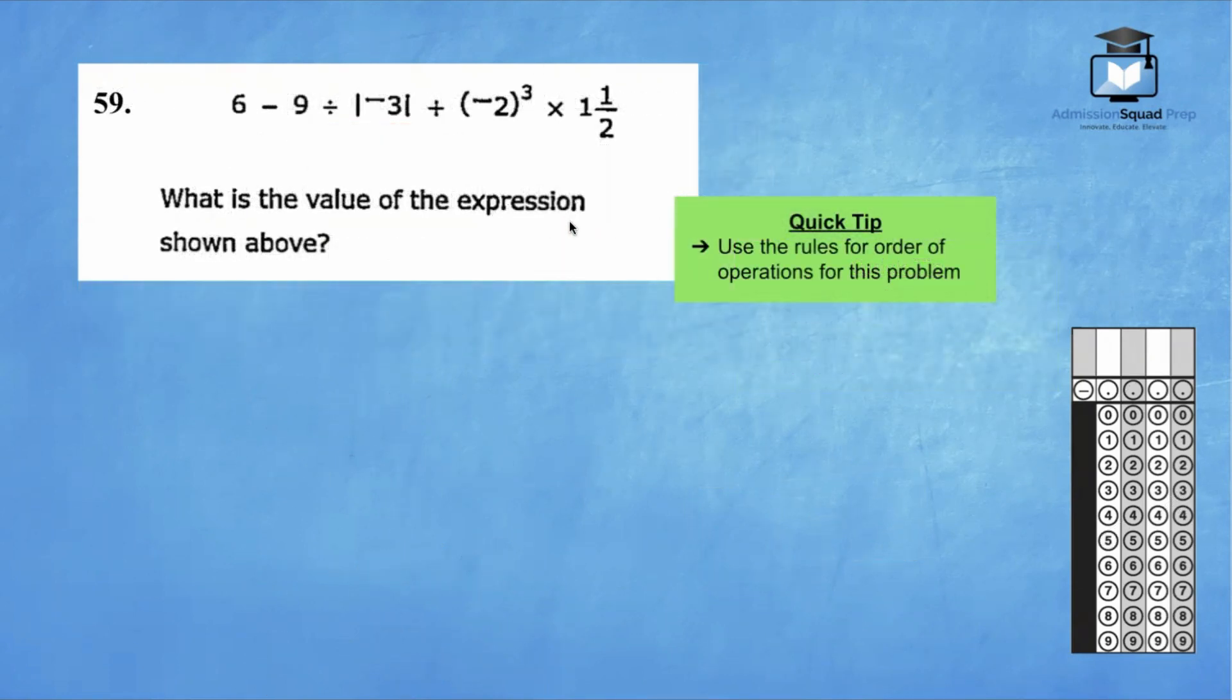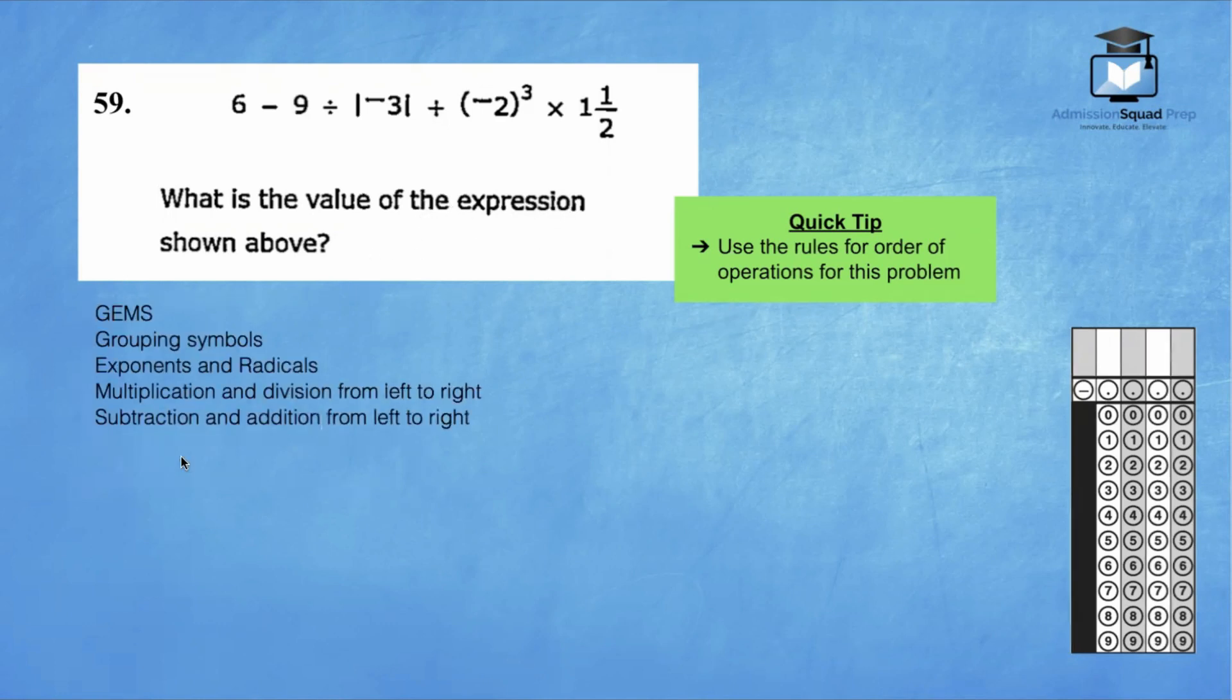For question 59, we are going to use the rules for order of operations. Let's take a look. It says, what is the value of the expression shown above? I like to use an acronym called GEMS. The G stands for grouping symbols. Your grouping symbols are parentheses, brackets, braces, and even absolute value. The E stands for exponents and radicals. The M stands for multiplication and division from left to right. And the F stands for subtraction and addition from left to right.